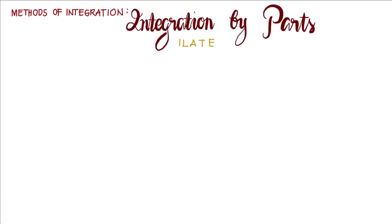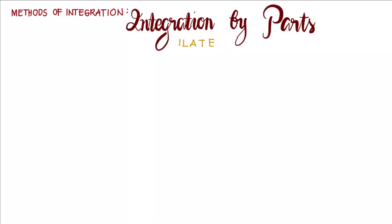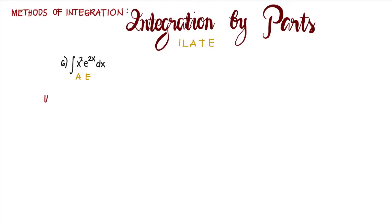For this video we are going to evaluate another integral using the method of integration by parts. This is example number six. We are going to evaluate the integrand x squared e to the power of 2x dx — a product between an algebraic function and an exponential function. From our guide ILATE, A comes before E, so we set A as the u part and E as the dv part.